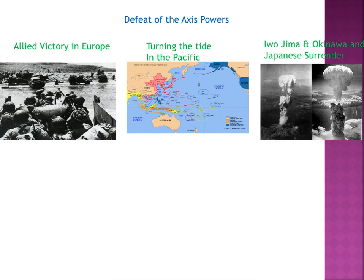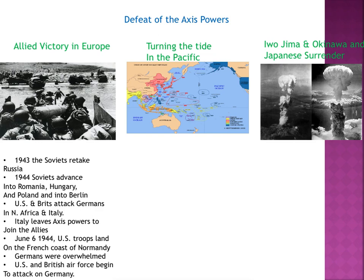The defeat of the Axis powers — how does World War II end? Allied victory in Europe: in 1943 the Soviets retook Russia; in 1944 they not only retook it but pushed the Germans back, advancing into Romania, Hungary, and Poland, and finally into Berlin. The U.S. and British attacked the Germans in North Africa and in Italy. Germany was beginning to face almost a two-front — even three-front — war. Then Italy left the Axis powers to join the Allies.